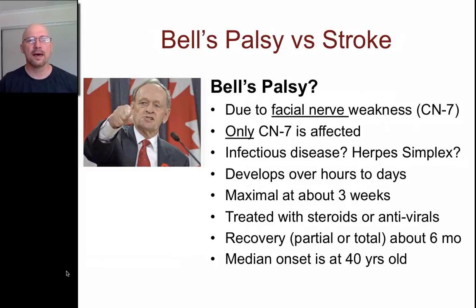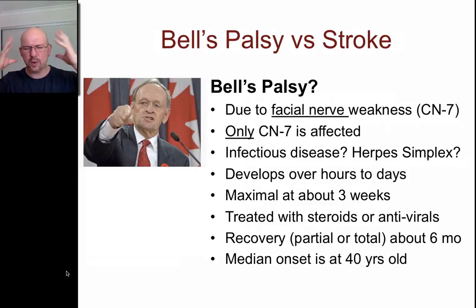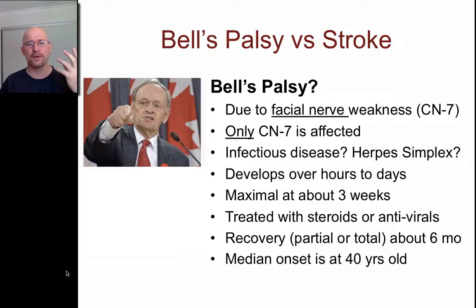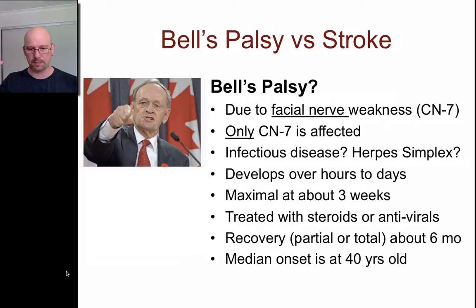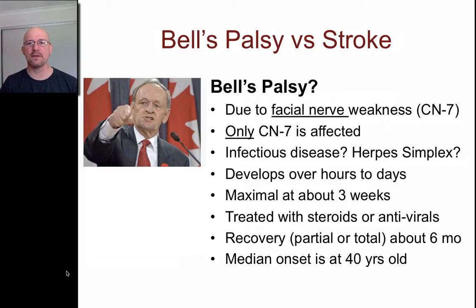Bell's palsy is something you might see out in the field — you probably will if you see a lot of patients. It's due to a weakness of the facial nerve, the seventh of the 12 cranial nerves that exit directly from the brain. It's actually an infection of the nerve itself, usually from herpes simplex. It develops slowly — over hours to sometimes days rather than the sudden onset of a stroke — and it's worst at about three weeks. We treat it with steroids and antivirals, and patients usually recover.